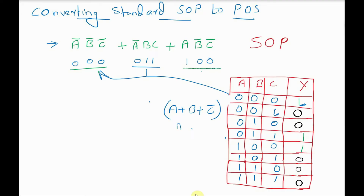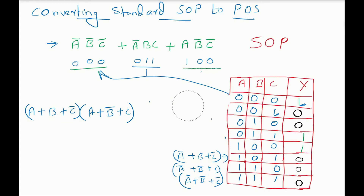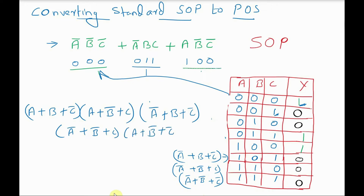Similarly, the next 0-row gives A + B̅ + C̅; the next one gives A̅ + B + C̅; then A̅ + B̅ + C; and the last one gives A̅ + B̅ + C̅. When you multiply all these sum terms together, you get the POS expression: (A+B+C̅)(A+B̅+C̅)(A̅+B+C̅)(A̅+B̅+C)(A̅+B̅+C̅). This is the equivalent POS expression of the given SOP expression.